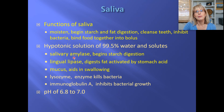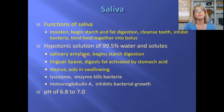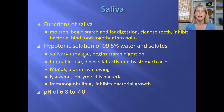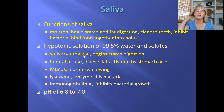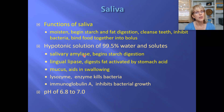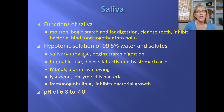Amylase can be made by different organs in the body. Right now we are talking about salivary amylase because it's in the saliva — it's mostly made by your parotid salivary gland. However, later on there is an enzyme called pancreatic amylase, which still digests starch because it's an amylase, but it comes from the pancreas.